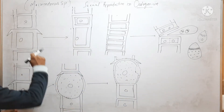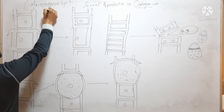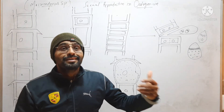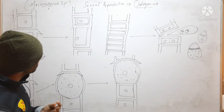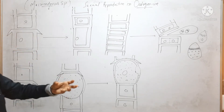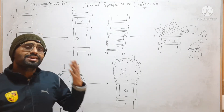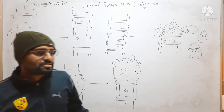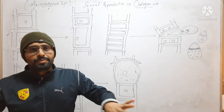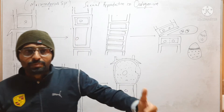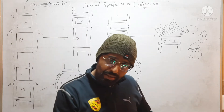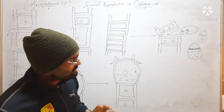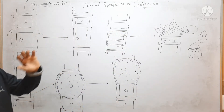Macroendera species is of two types: it may be monoecious or it may be dioecious. In the case of monoecious, both antheridium and oogonium develop on a single filament. But in the case of dioecious, they develop on separate filaments. However, the process of development of antheridium and oogonium is similar in both monoecious and dioecious.